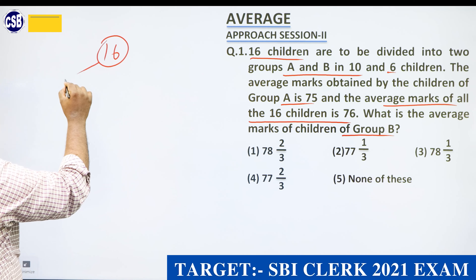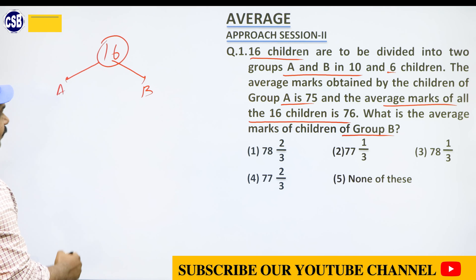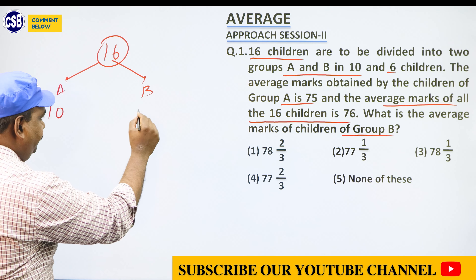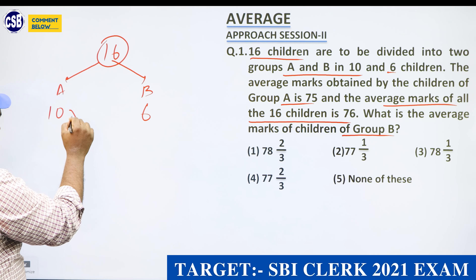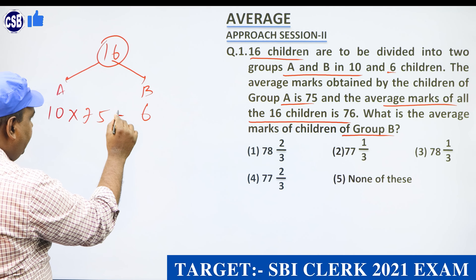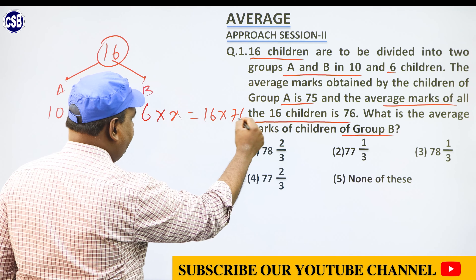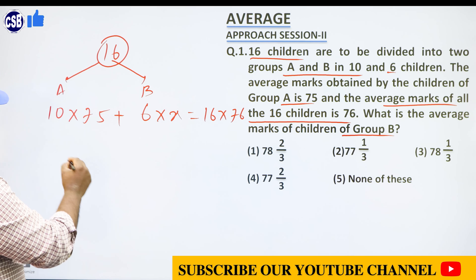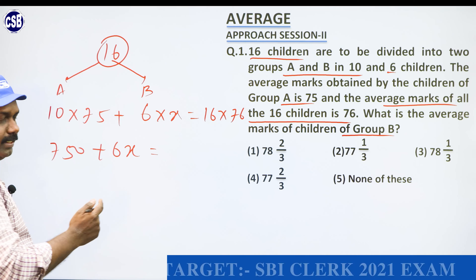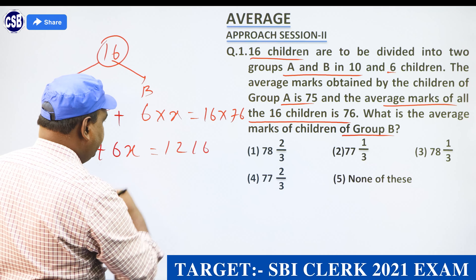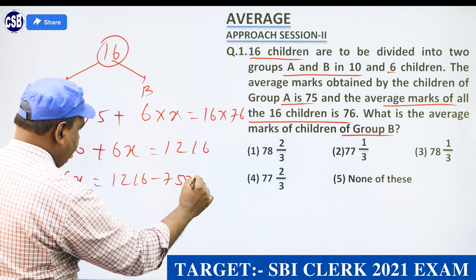Total 16 children — A group and B group. A group 10 children, B group 6. In this case average mark of A group is 75, B group is X, and the overall average for 16 children is 76. So that gives us: 16 into 76 equals 750 plus 6x.